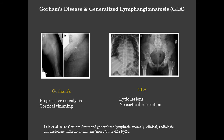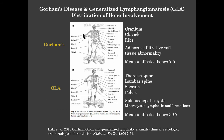This is the same paper Dr. Hovsepian mentioned, comparing GLA and Gorham's disease. These are not the most common disorders, which is why we go back to this one paper—they were able to consolidate as many cases as they could. The image shows differences in anatomic distribution of bony involvement: in Gorham's, it was more common in the cranium, clavicle, and ribs with fewer but severe involvements; in GLA, more bones were affected, concentrated in the spine, sacrum, and pelvis.